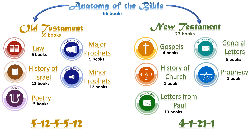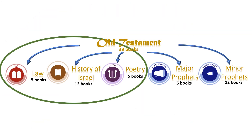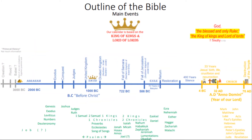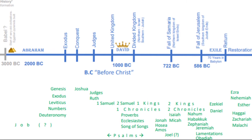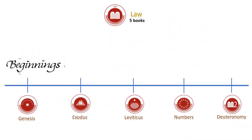Do you remember these categories from our last lesson called Anatomy of the Bible? Today we are going to look at the books in the first three categories of the Old Testament. Do you remember this Bible timeline from our previous lessons? We are basically going to look at the books written in this time period.